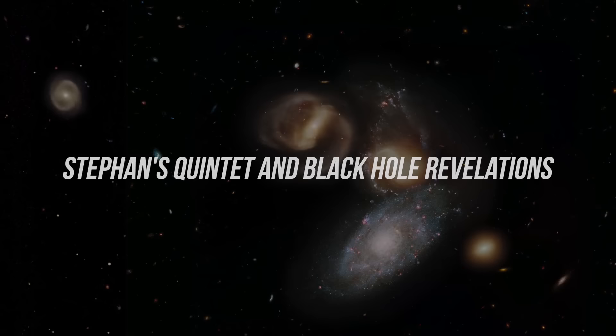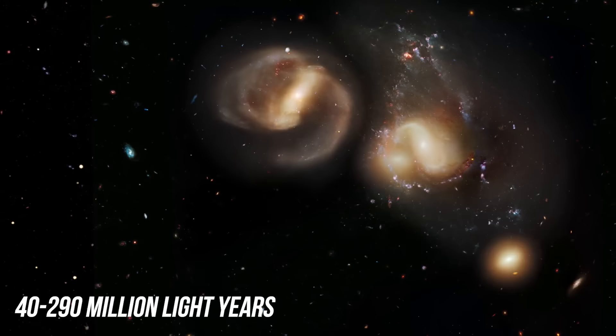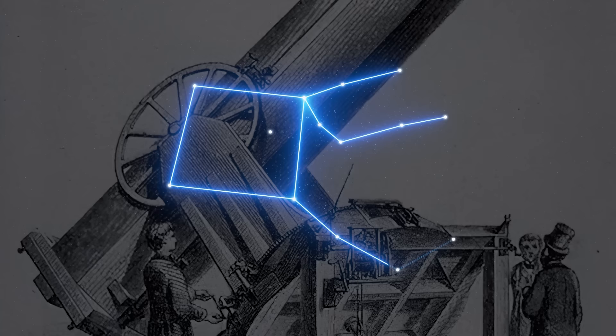Spread across space between 40 and 290 million light years from Earth, sits a collection of galaxies known as Stéphane's Quintet. This is part of the Pegasus constellation. Although Stéphane's Quintet was first discovered in 1877 by French astronomer Edouard Stéphane, the new images captured by the James Webb Telescope have shined a new light on what this constellation of galaxies can teach us.